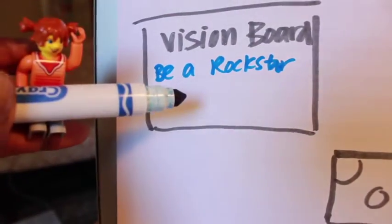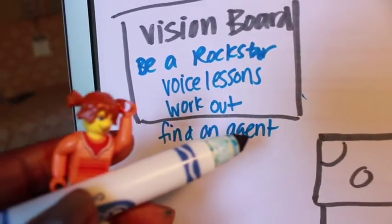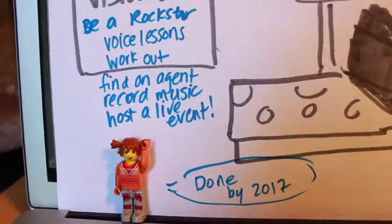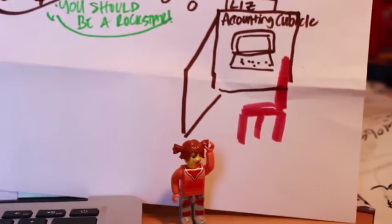She said this year was going to be different, and she wrote a big list of stuff down, like get voice lessons and work out and find an agent and record music and have a live music event. She said she was going to do it all by the end of the year, and next to her vision board, she kept all those tasks.